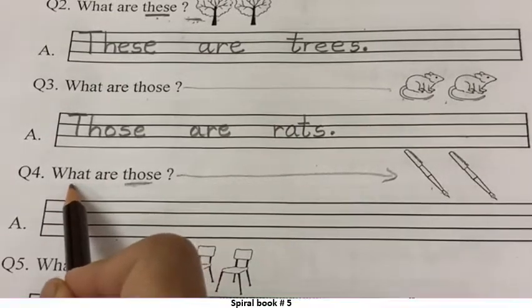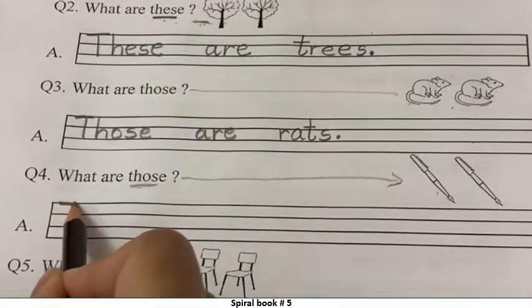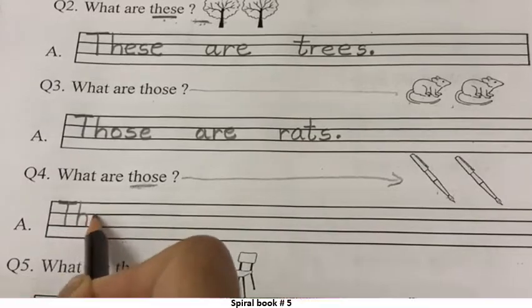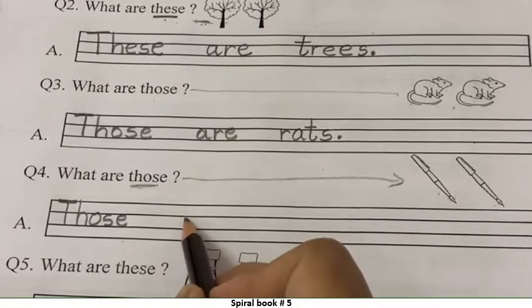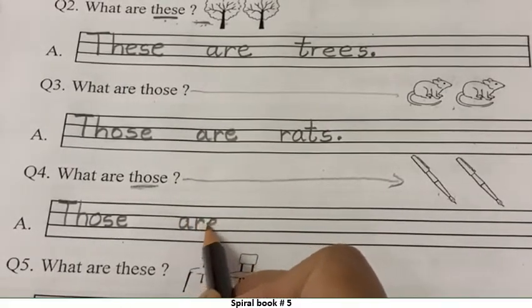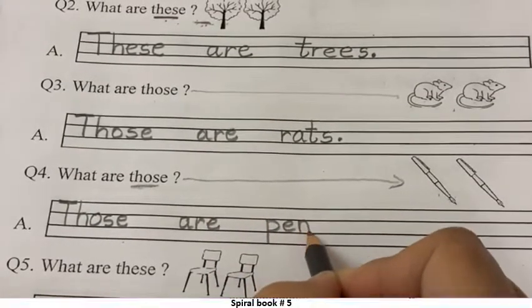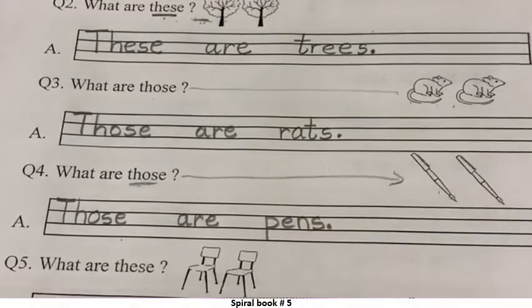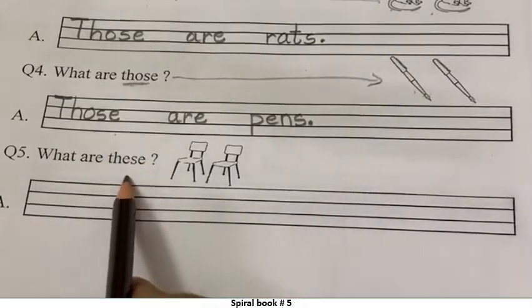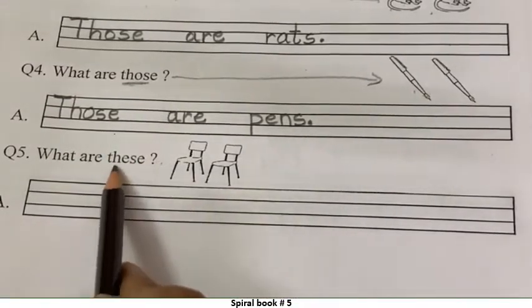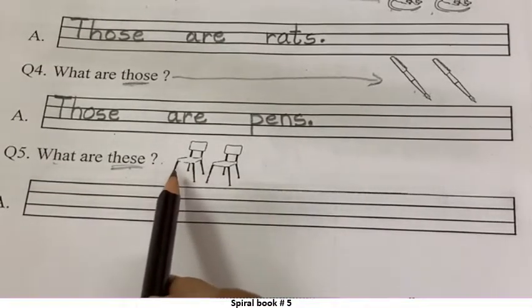What are those? What means? Kya? Kya hai vey? Vey pens hai. Come on. Let's write those. T, H, O, S, E. Those. One finger gap and then write are. Those are pens. P, E, N, S. And full stop. Now, what are these? Chairs are near. Right? That's why these. What are these? These are chairs.